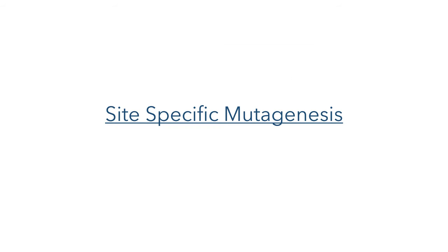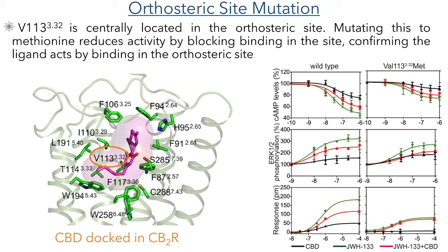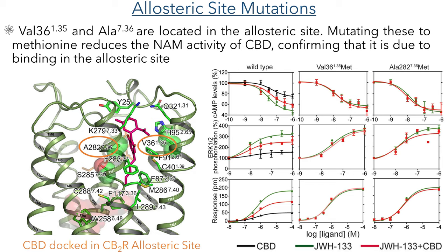To probe the mechanism of this allosteric modulation, the authors carried out site-specific mutations — mutating specific amino acids within the receptor to assess the impact on binding. The first mutation was a valine centrally located in the orthosteric site, mutated to methionine. This greatly reduced the agonist activity of the molecules, confirming this as the binding site for agonists. To probe the allosteric site, they carried out two mutations — valine-36 and alanine-282 — also mutated to methionine. This changed the response to the combination of CBD and JWH-133 and eliminated the negative allosteric modulation activity of CBD, confirming that this allosteric site is responsible for the modulation seen in the previous experiments.